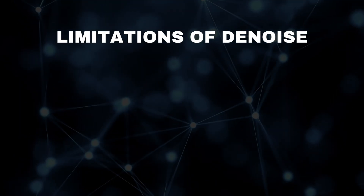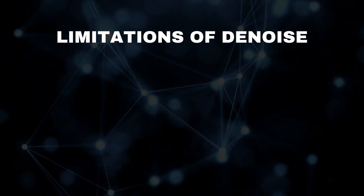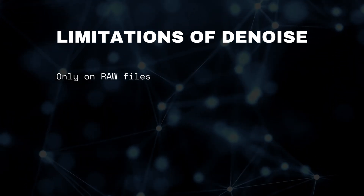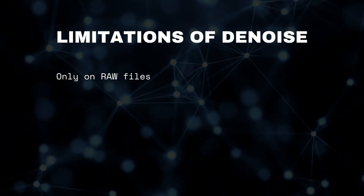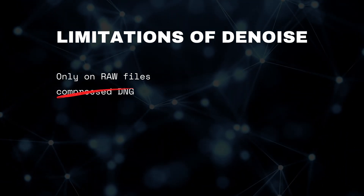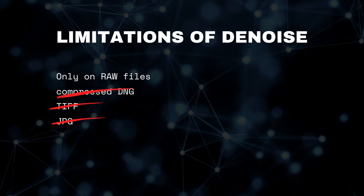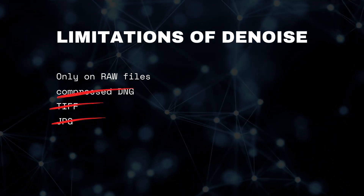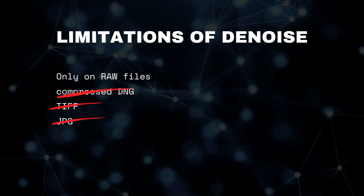So what are the limitations of the denoise feature as of April 2023? First, denoise can only be applied onto RAW photos — no DNGs, no compressed DNGs, no TIFFs, and most importantly, no JPEGs. It can only be applied to RAW file formats.